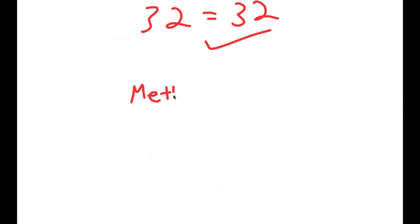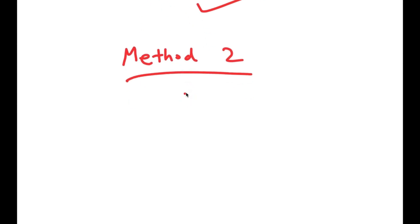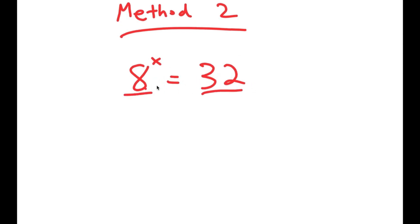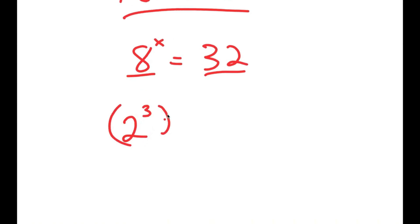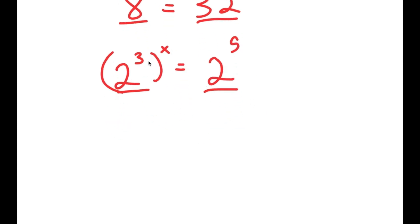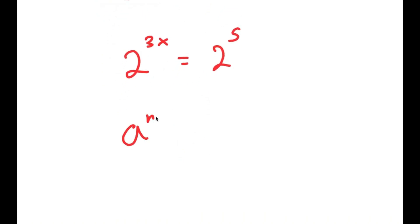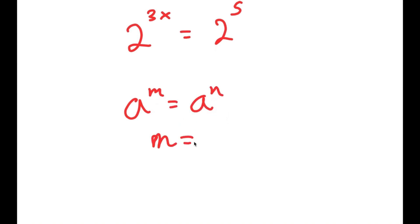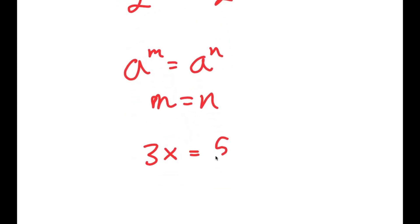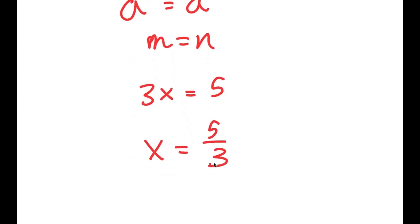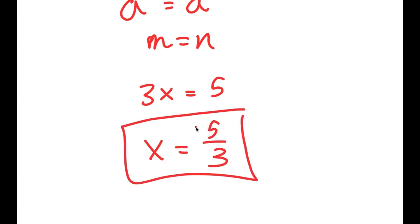I also have a second method of solving this problem. For the second method, we have the same equation: 8 to the power of x is equal to 32, and this is a simpler method. I'm going to rewrite both numbers: 8 as 2 to the power of 3, and 32 as 2 to the power of 5 — rewriting both with the same base. So 2 to the power of 3 to the power of x equals 2 to the power of 3x, which equals 2 to the power of 5. Because the bases are the same, 3x equals 5, so x equals 5 over 3. That's another method of solving this equation.